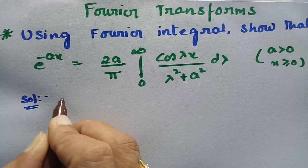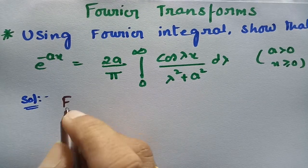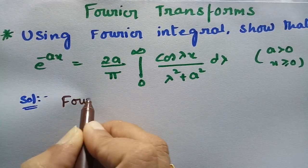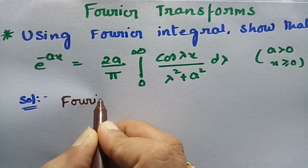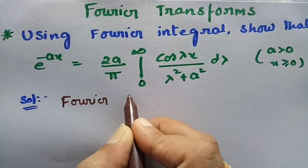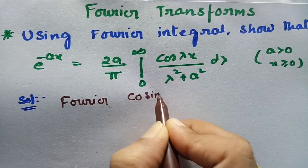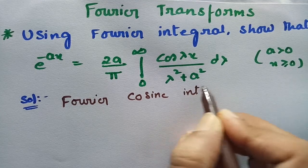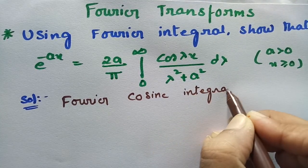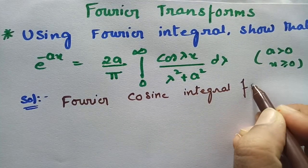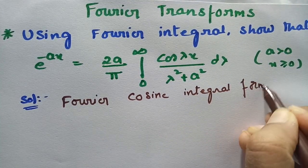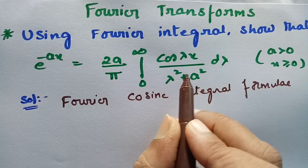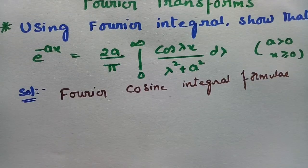I am going to use the Fourier cosine integral formula. This is the Fourier cosine integral formula. I have to take the Fourier cosine integral formula because on the right-hand side there is a cosine term.